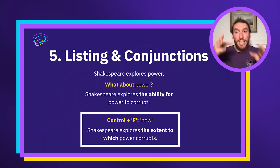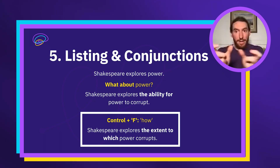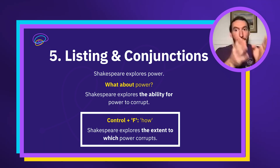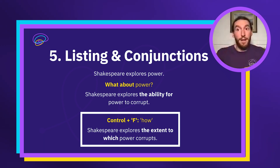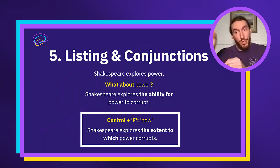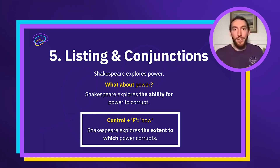Or just write 'Shakespeare explores the corruptibility of power' — use the noun instead. So: 'Shakespeare explores how power corrupts' versus 'Shakespeare explores the corruptibility of power.' Can everyone see the difference? The second one has a lot more punch to it.